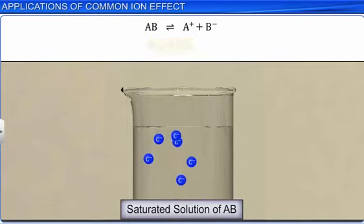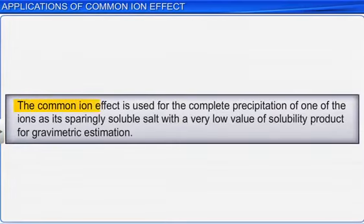The common ion effect is used for the complete precipitation of one of the ions as its sparingly soluble salt, with a very low value of solubility product, for gravimetric estimation.